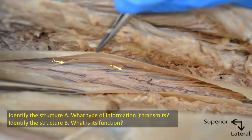This is a dissection of the vertebral canal showing the spinal cord after opening the dural sheath. The vertebral canal is exposed after removal of the laminae and spinous processes of the vertebrae. So we are looking at the posterior aspect of the spinal cord. Structure A is thus a posterior root of a spinal nerve.